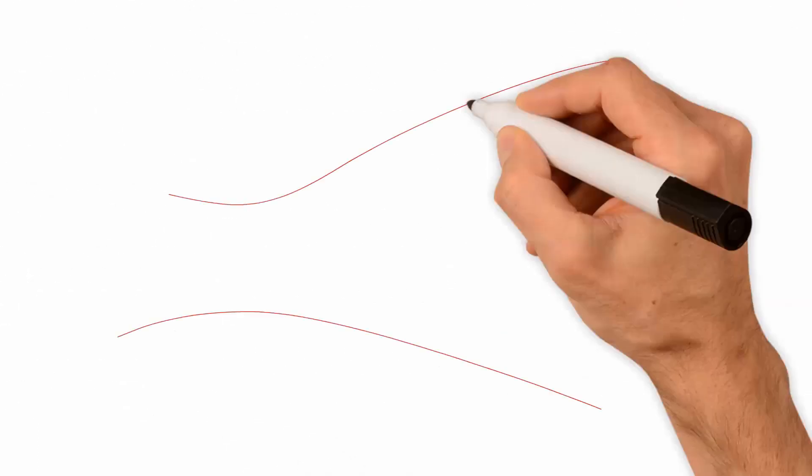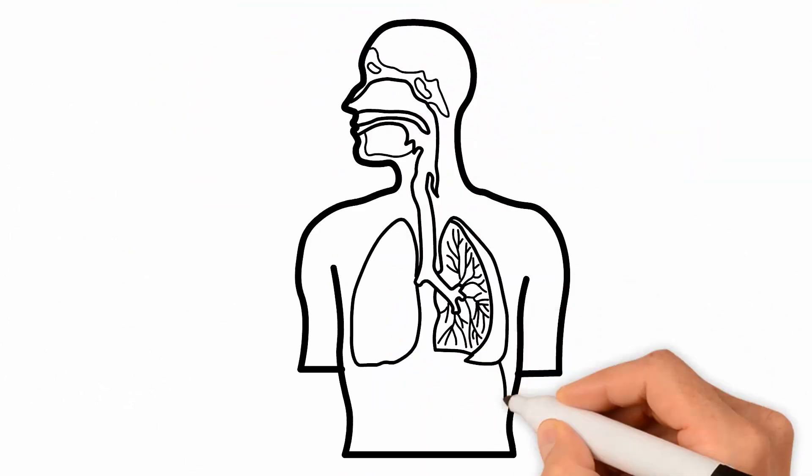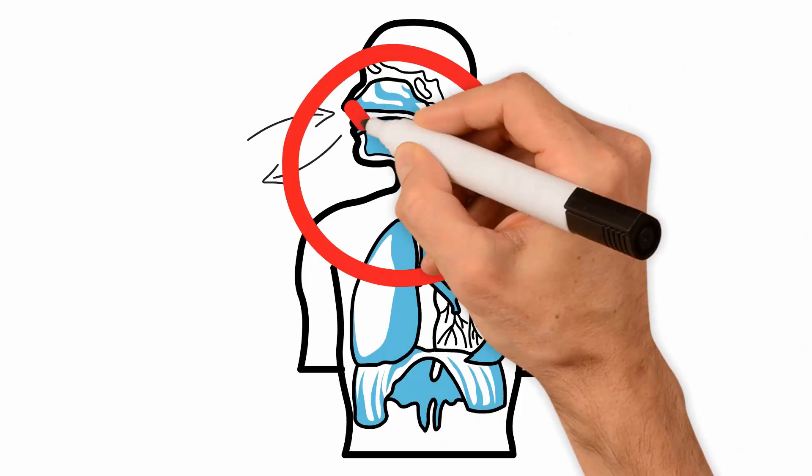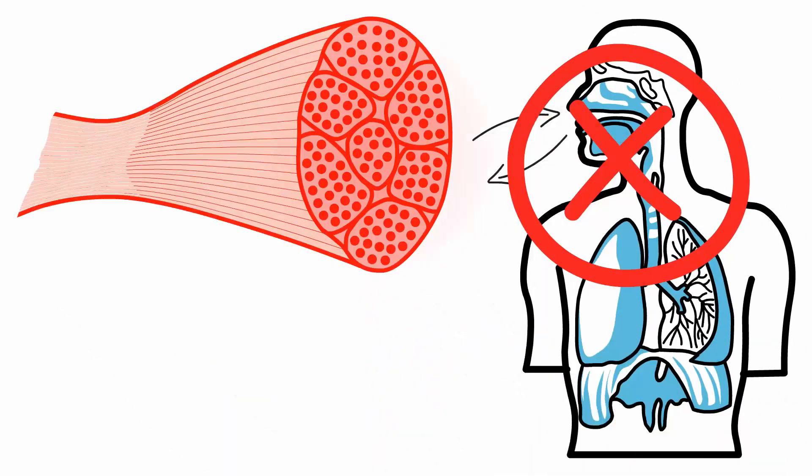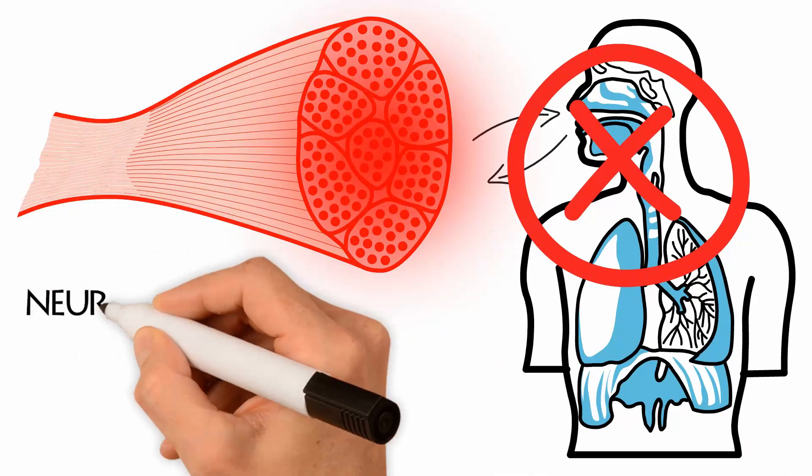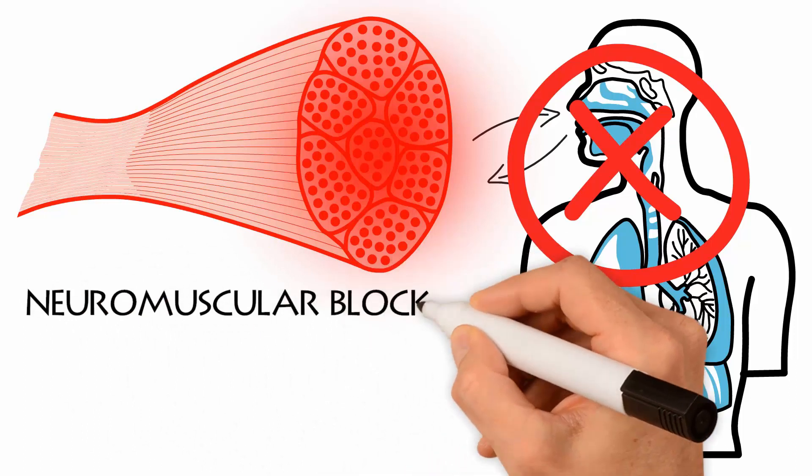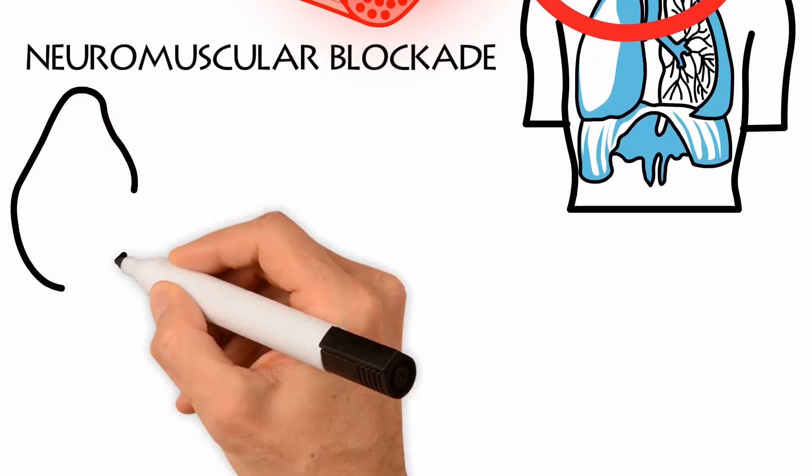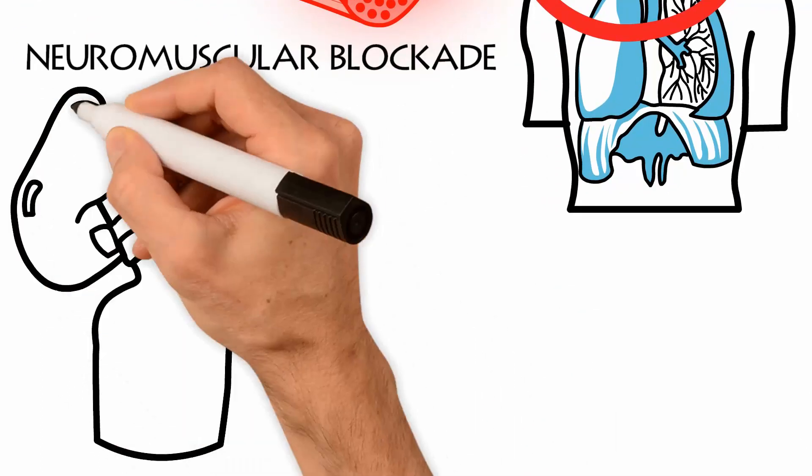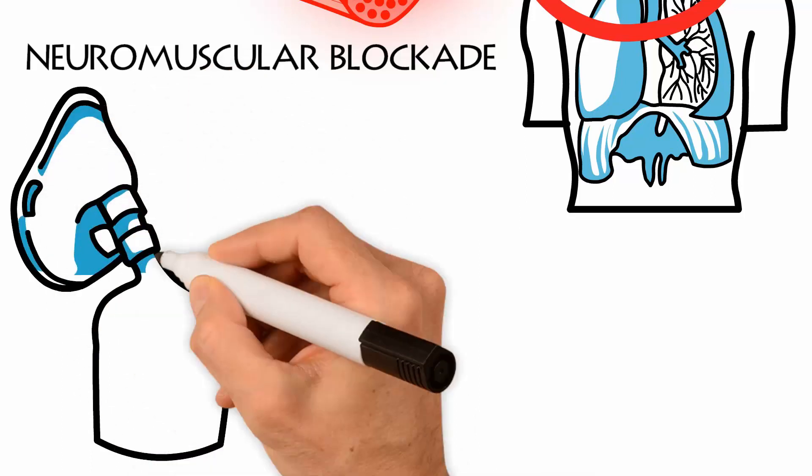The physician orders the muscle relaxant, succinylcholine, to be administered. The patient is now unable to breathe spontaneously due to pharmacological blocking of his respiratory muscles, known as neuromuscular blockade, and the patient is totally dependent on the clinical team to ensure adequate ventilation and oxygen during the intubation procedure.